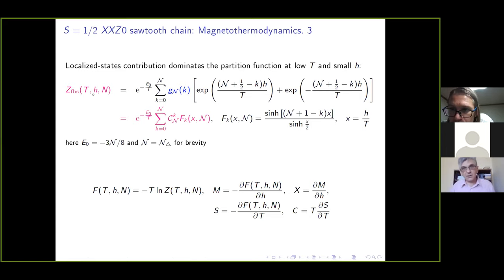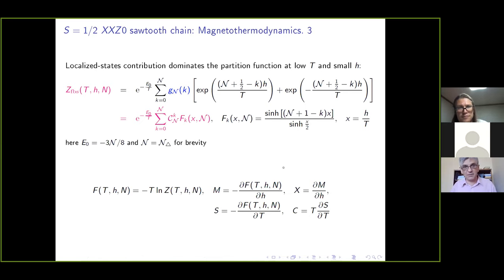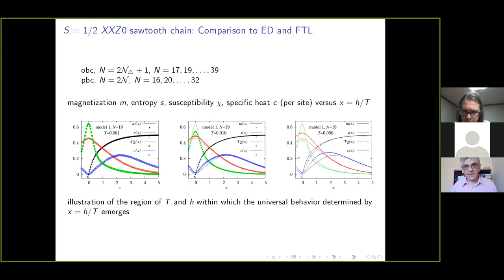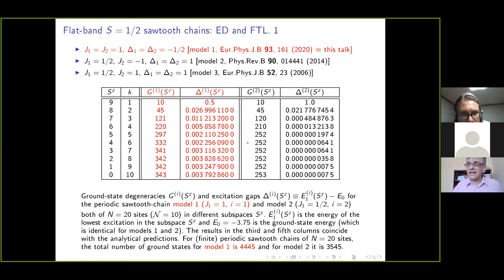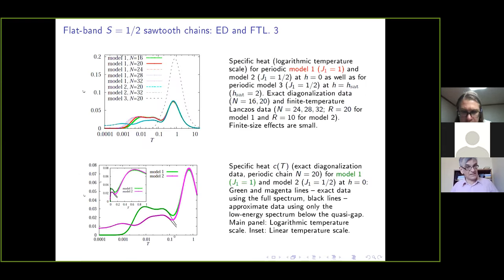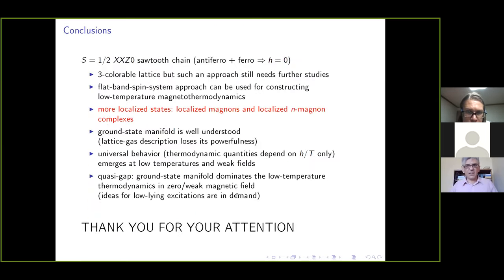The low-temperature partition function is conditioned by the ground state in a small magnetic field. We can calculate all thermodynamic quantities and compare our analytical predictions with exact diagonalization. We see that at sufficiently low temperature we can reproduce the magnetization, entropy, and susceptibility perfectly well. Of course, at lower temperatures some other states come into play and we see differences. We also studied low-energy excitations: the density of states shows that low-energy excitations are separated from high-energy excitations by a quasi-gap, which explains the low-temperature behavior of the specific heat at zero magnetic field.